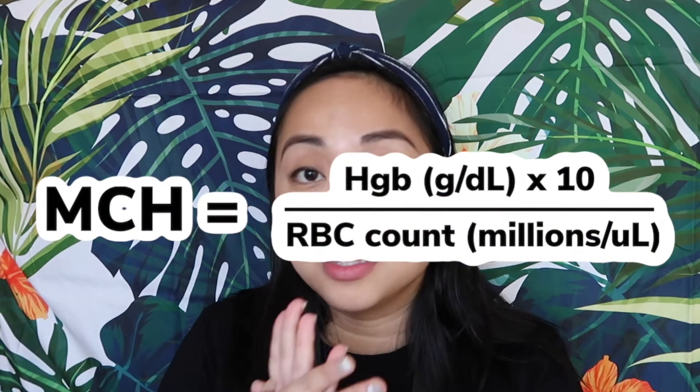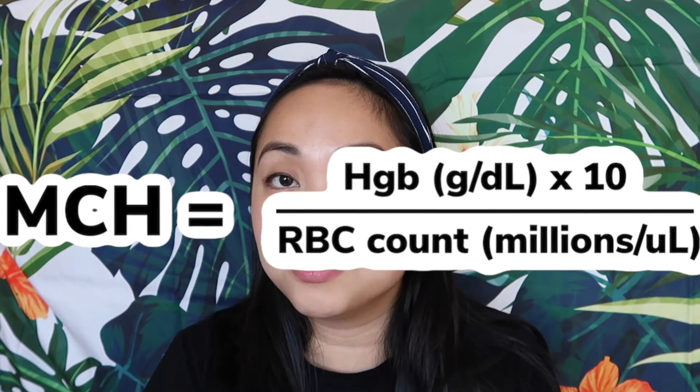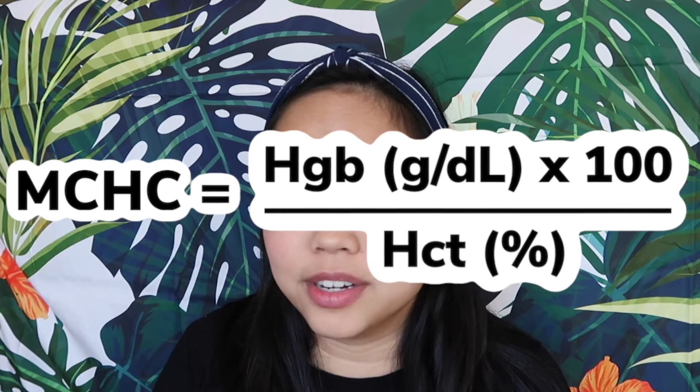Next we have the MCH, mean corpuscular hemoglobin, and the MCHC, mean corpuscular hemoglobin concentration. Both tell you how much hemoglobin is in the red blood cells, but they are calculated differently. MCH is calculated by dividing hemoglobin by RBC count — it's the average amount of hemoglobin based on your RBC count. MCHC is calculated by dividing hemoglobin by hematocrit, which is the percentage of packed cell volume.